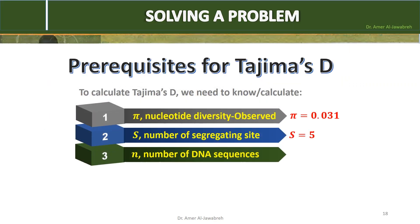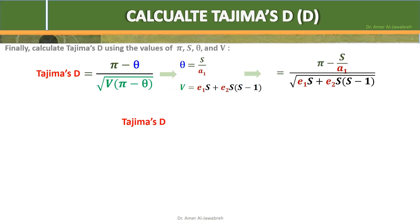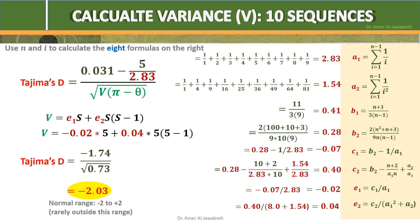With pi, S, N, theta and V known, let's calculate Tajima's D. The Tajima's D equals minus 2.1, with normal range between minus 2 to 2, which is really outside this range. If you ask me why not considering N equals 10 instead of N equals 4, well, in both cases the Tajima's D values will be close.